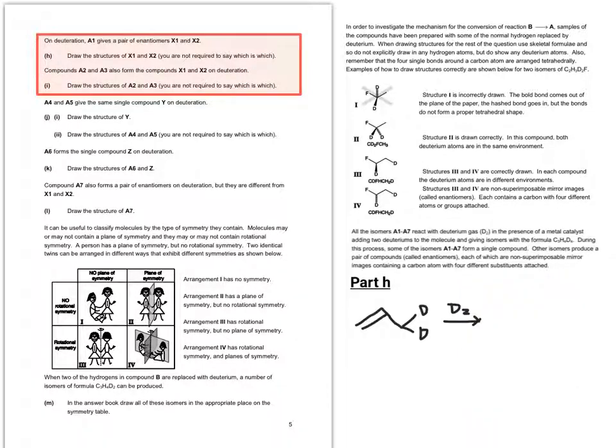So, looking at the question, so looking at part H, the first bit, it says that A1 gives a pair of enantiomers X1 and X2. Now, what they mean is that A1 is the deuterated structure that we worked out earlier, where the deuterium atoms, both of them, ended up on the CH3. So they replaced two of the hydrogens in CH3. So reacting that with D2 deuteration, that would give that possible structure. However, they want a pair of enantiomers, so you have to work out which carbon has four different groups coming off of it. And then you can work out what the two non-superimposable mirror images are. So looking at the carbons here, it seems quite clear that the one in the middle would be the one that has four different groups coming off it. So that means we can have two different possible enantiomers that still represent that same compound.